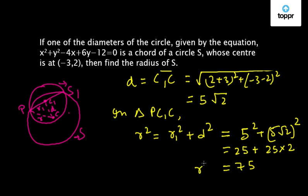So R² = 75. So from here we get R = 5√3. So this is the radius of the circle S.